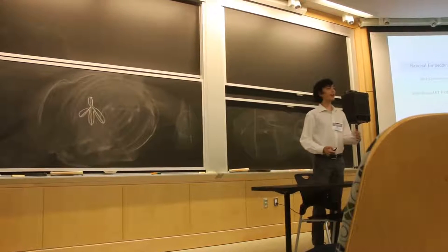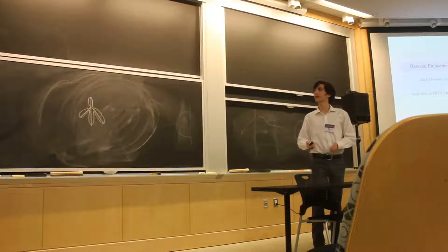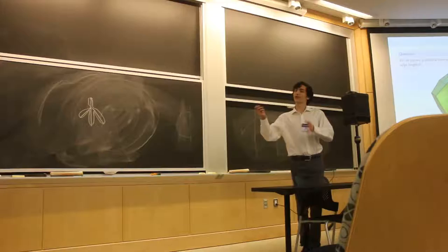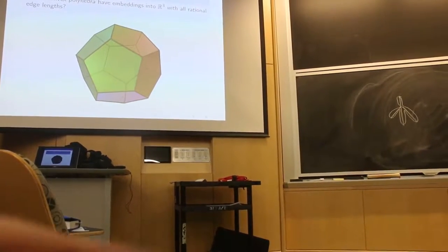Hi, my name is Zach Cromann, and my presentation is on the rational embeddings of convex polyhedra. The main question I will reference is: Do all convex polyhedra have embeddings with all rational edge lengths?